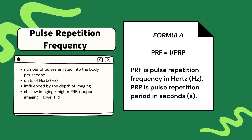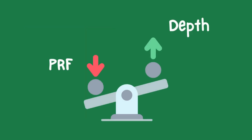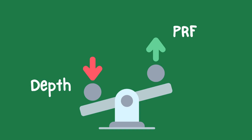Remember in our last chapter we discussed frequency and its relationship to penetration — lower frequencies were better for penetration, whereas higher frequencies were optimal for imaging more shallow structures. A similar concept applies for PRF. PRF is inversely related to depth, like a seesaw where when one variable goes up, the other goes down. When we image at increased depths, the PRF is decreased, and when we image at shallow depths, the PRF is increased.